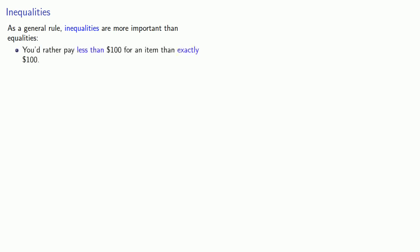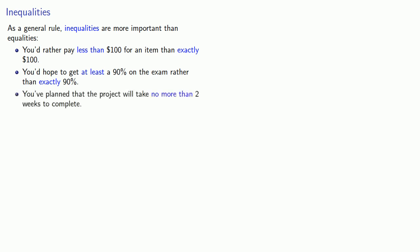You'd rather pay less than $100 for an item than exactly $100. Or you'd hope to get at least 90% on an exam rather than exactly 90%. Or you've planned that a project will take no more than two weeks to complete, and you don't want it to take exactly two weeks.